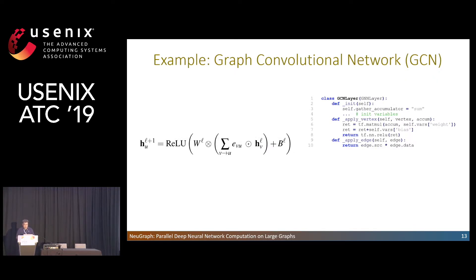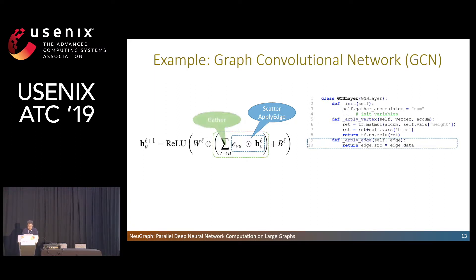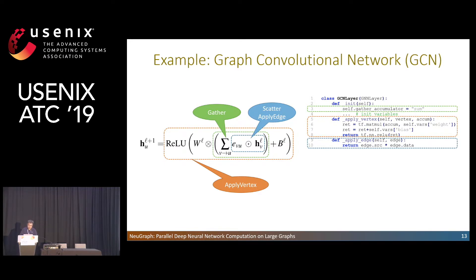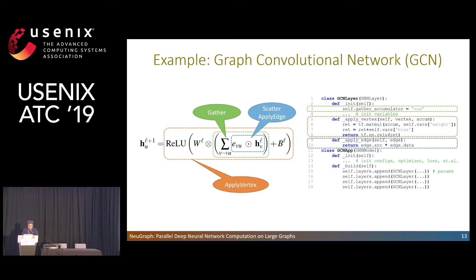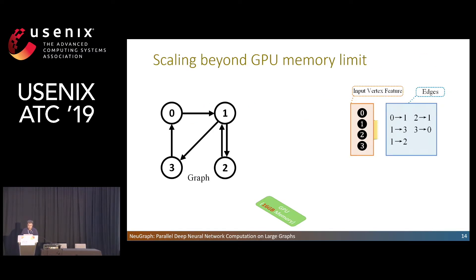Here is an example describing how to map graph convolutional network to SAGA. In GCN, information from neighbors is multiplied with the scalar value on the edge. So we implement a multiply operator in apply-edge, and set the accumulator as sum to sum up neighbor information. Then, GCN has a fully connected neural network on the vertex, so we implement it in apply-vertex. This code represents one layer of GCN, and we can implement multiple layers by stacking them. In each layer, the vertex features and edge features from the previous layer are used to compute new vertex features.